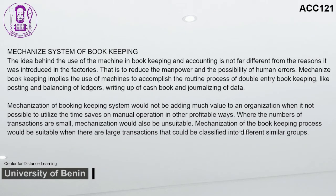The mechanized system of bookkeeping aims to reduce manpower and the possibility of human errors. Mechanized bookkeeping implies the use of machines to accomplish the routine process of double-entry bookkeeping, like posting and balancing of ledgers, writing up of the cash book, and journalizing of data. Mechanization would not add much value when it is not possible to utilize time saved in other profitable ways. Where the number of transactions is small, mechanization would also be unsuitable. It is most suitable when there are large transactions that can be classified into different similar groups.